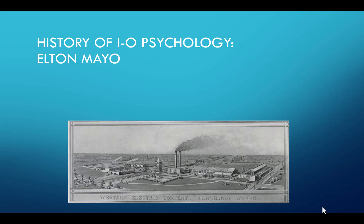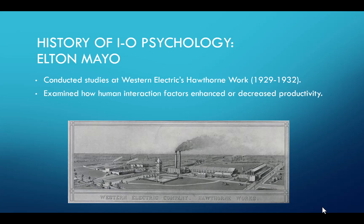Another important person in the history of IO psychology is Elton Mayo. He conducted studies at Western Electric's Hawthorne Works in the late 1920s and early 1930s. He was interested in examining how human interaction factors enhanced or decreased productivity, exploring interpersonal relations, motivation, and organizational dynamics. His research was really the origin of organizational psychology.